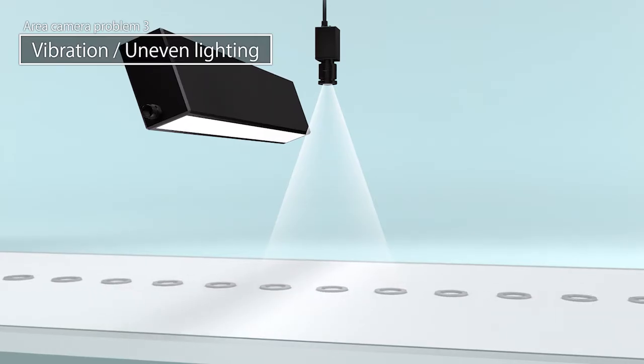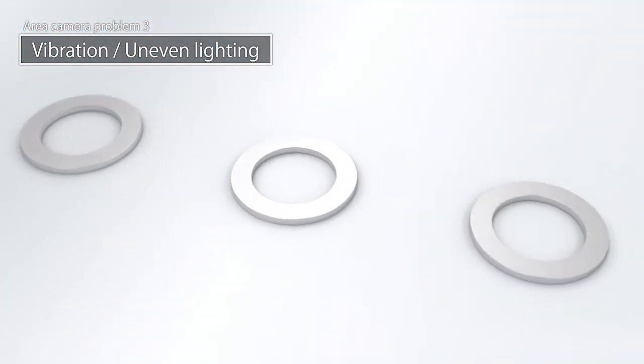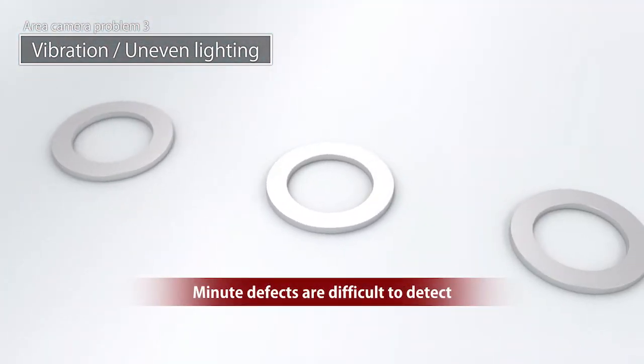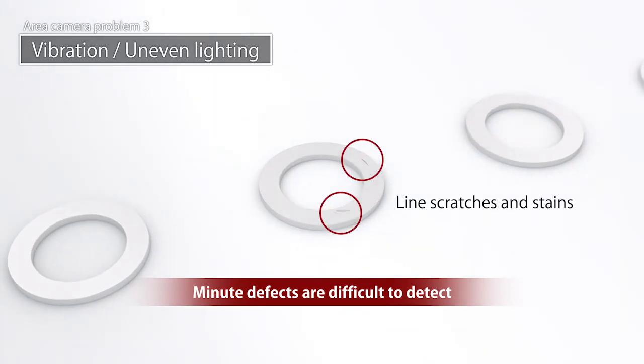Area cameras have fixed light sources, and their performance often suffers due to uneven lighting. It can also be difficult to detect tiny defects that are not visible from certain angles.